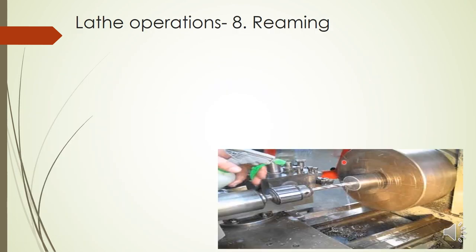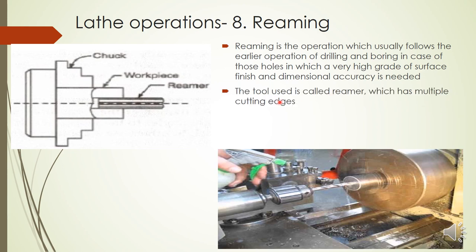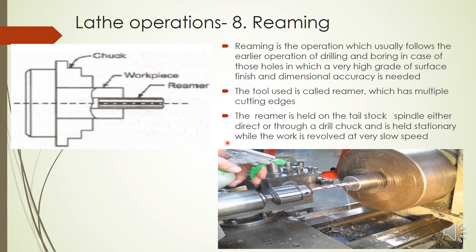Reaming is the operation usually performed after drilling and boring when the hole requires a very good surface finish and dimensional accuracy. The tool used is a reamer, which has multiple cutting edges. The reamer is held in the tailstock spindle either directly or through a drill chuck, and the workpiece is rotated at a very low speed.